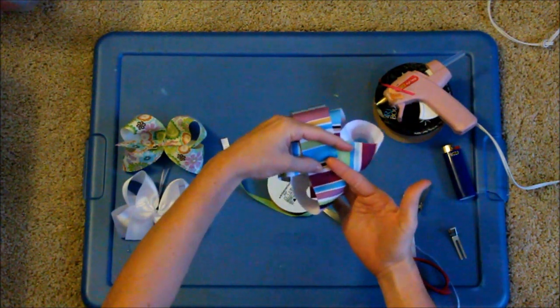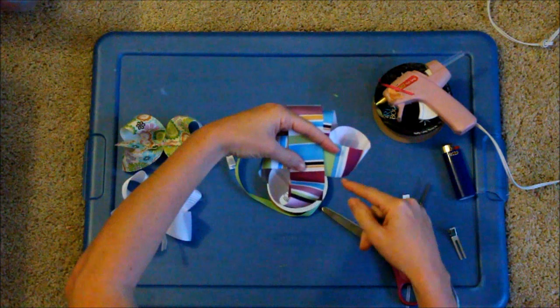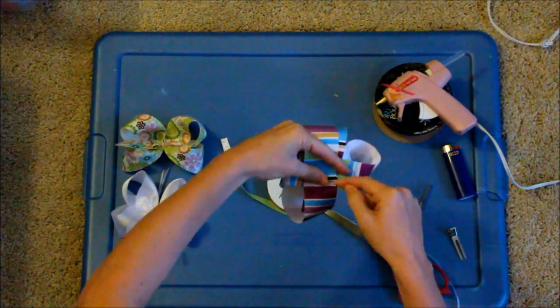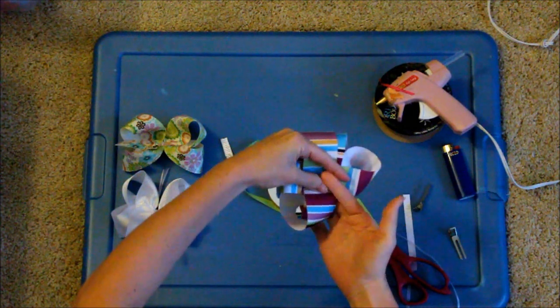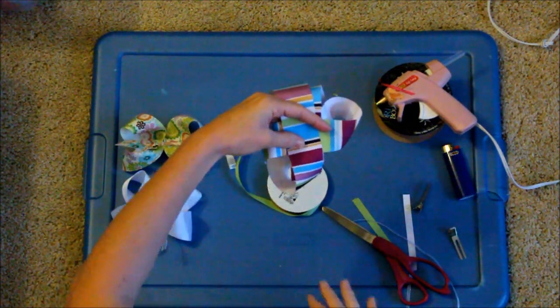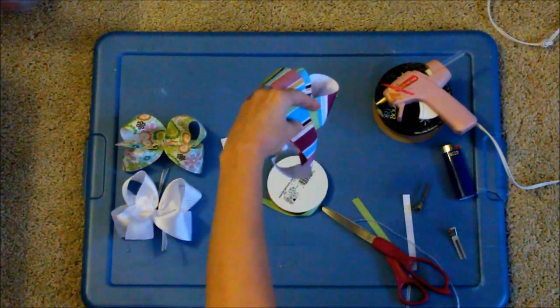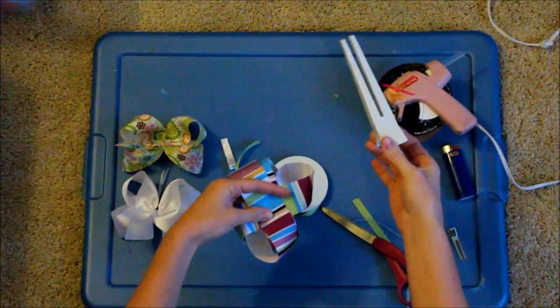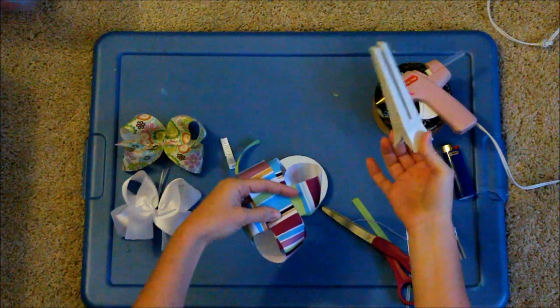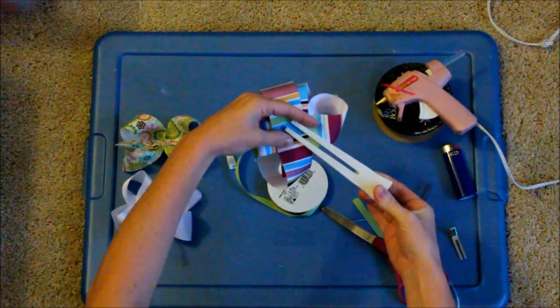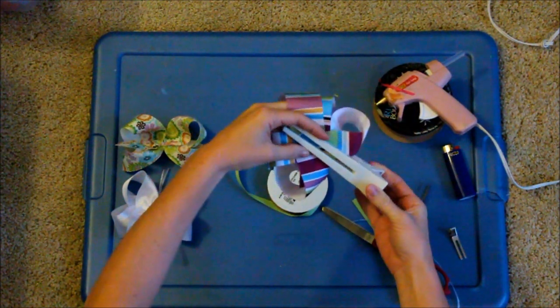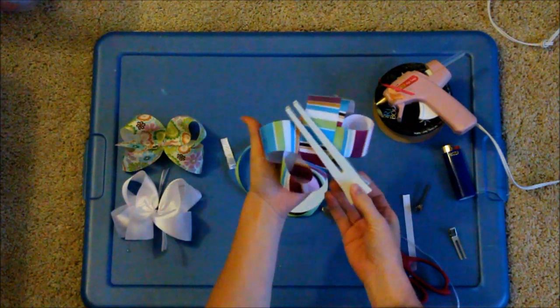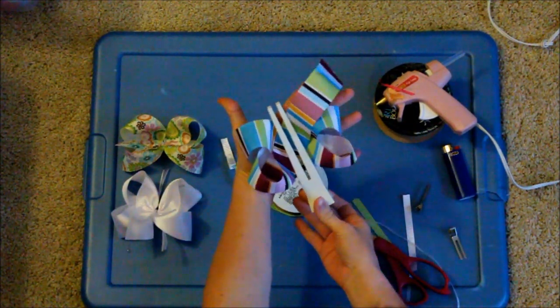Now, you're going to hold it with one hand because if you want to sew it, this is where you would crinkle it all in and sew it, but I don't do that. I like to do the easy way. I'm going to take my big alligator clip, and you can use this, or you can use a big sally clip that you would use in your hair, and you're going to clip it right through the middle. Okay? You're going to squeeze it. This is what it looks like so far.